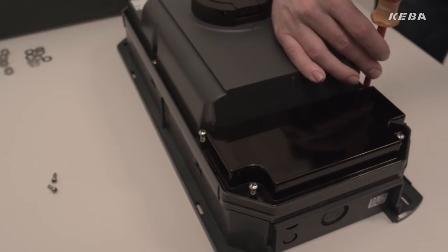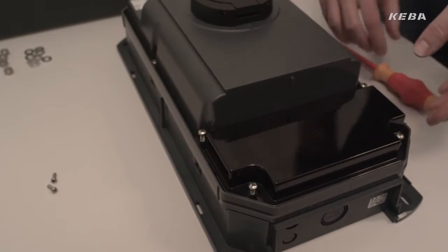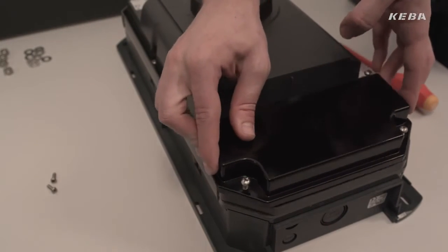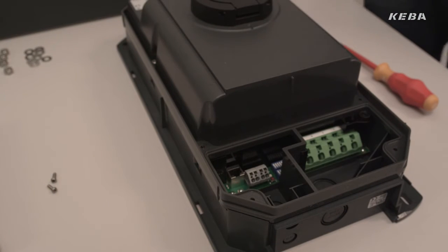The connection area of the Kiba wallbox is separated from the actual power electronic parts and has a separate cover. This ensures that the interior of the unit is protected against dirt.